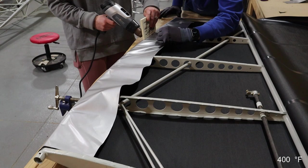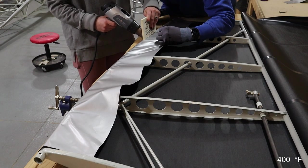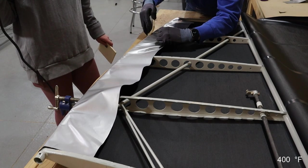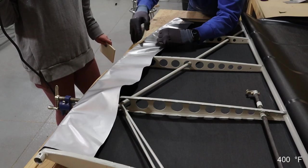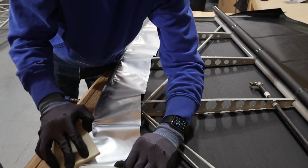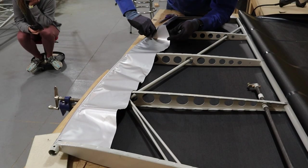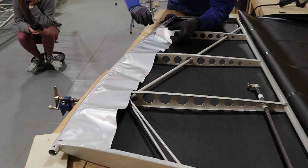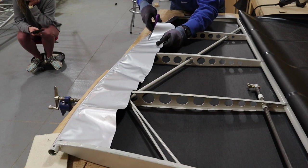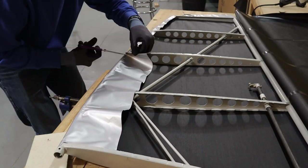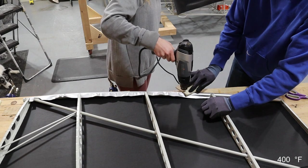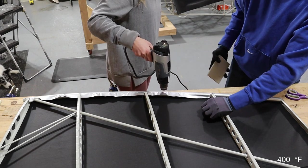Then Amanda would heat the leading edge, blocking the fabric further back to keep from activating the glue on that portion, while I would pull as hard as I could trying to stretch and pull out any wrinkles. After sticking the fabric down about 70% of the way around the leading edge tube, I cut the excess off so it would just about wrap the rest of the way around. Afterwards we finished wrapping the underside piece around the leading edge tube.